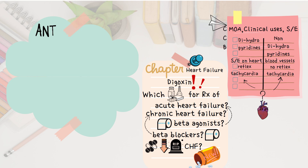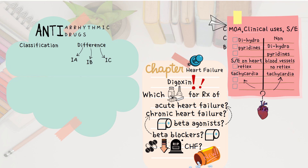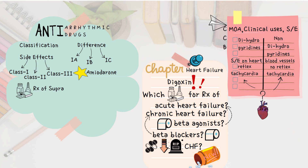Anti-arrhythmic drugs are not very commonly asked — you should stick to the classification. Most importantly, what is the difference between class 1a, 1b, and 1c drugs in terms of changes produced on the action potential duration? Then side effects of class 1 group, side effects of class 2, side effects of class 3, and most importantly amiodarone — the side effect profile of amiodarone. Which drugs are used for the treatment of supraventricular tachycardia? What is the difference between adenosine and calcium channel blockers in terms of treatment of supraventricular tachycardias?